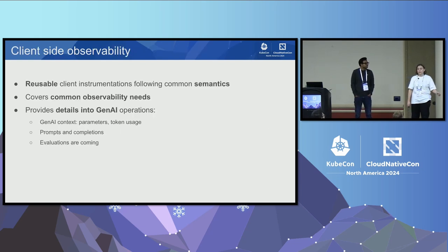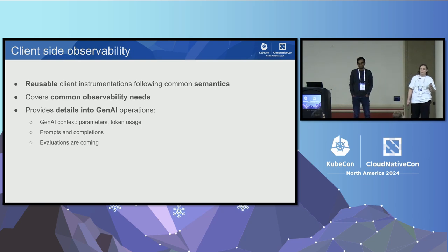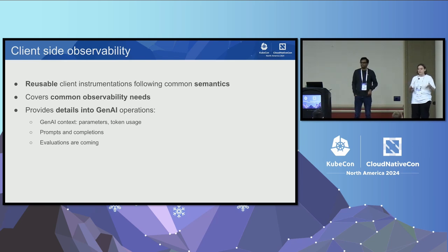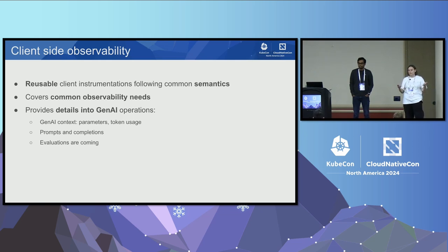On the client side, as part of OpenTelemetry, we are actively defining semantic conventions and building instrumentation libraries. We want people to use high-quality instrumentation that emits telemetry according to conventions — a contract between something that produces telemetry and tools that consume it. You can build dashboards, alerts, queries, and visualizations based on this contract. We need to define what telemetry we're going to emit so that others can build on top of it.